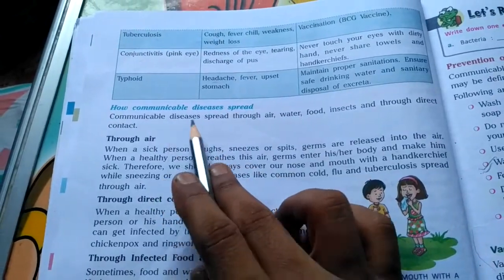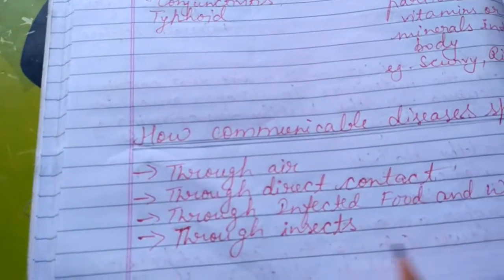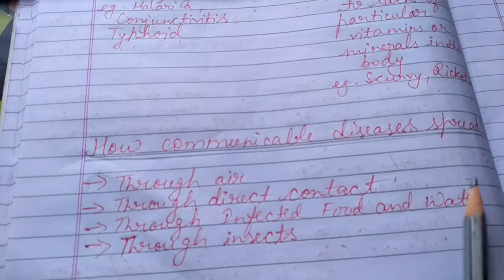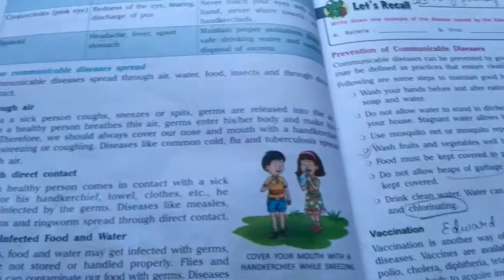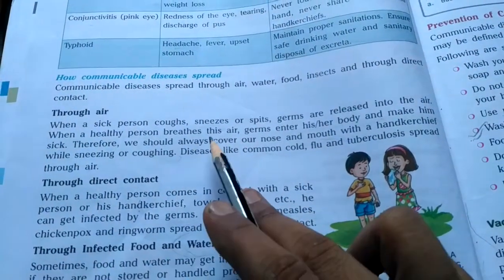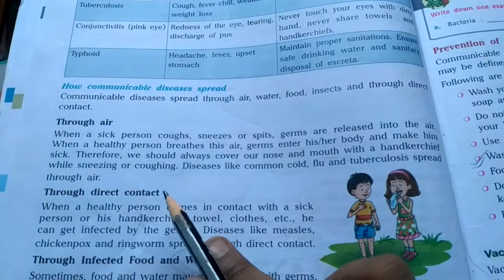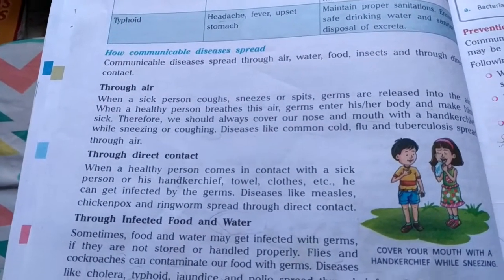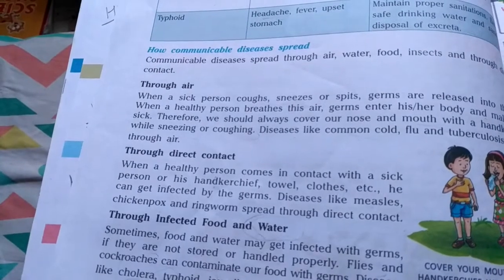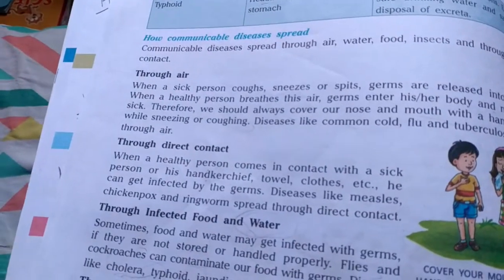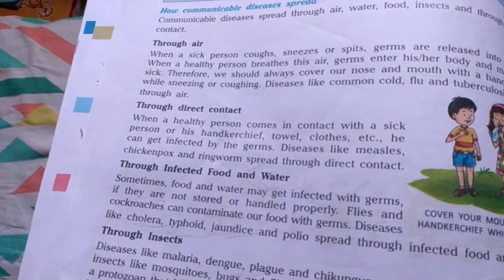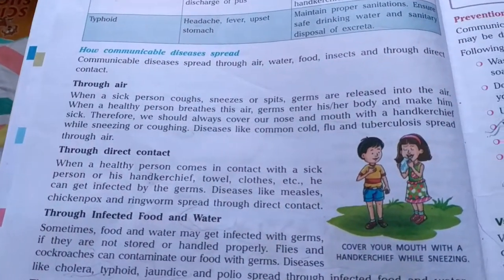Communicable diseases can spread through four carriers: air, direct contact, infected food and water, and insects. If a sick person coughs, sneezes, or spits, germs are released into the air. When a healthy person breathes that air, they may get sick. You should always cover your mouth and nose with a handkerchief while sneezing or coughing.